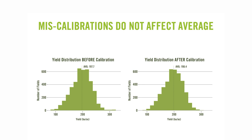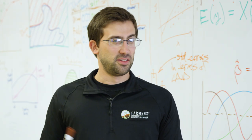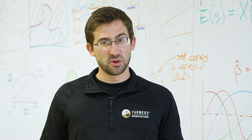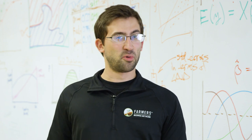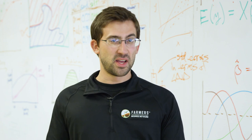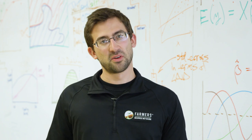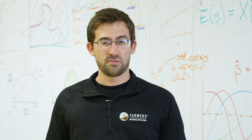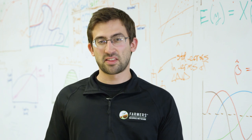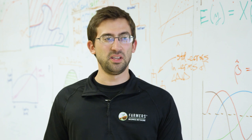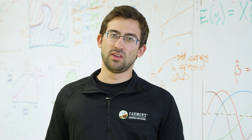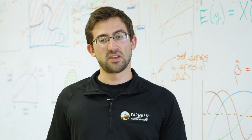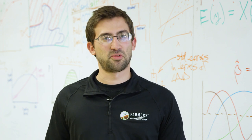If a monitor records yields 10 percent higher on some fields and 10 percent lower on others, you might incorrectly think one field did better when it was actually just a calibration problem. But in aggregate across FBN, data miscalibrated too high and data miscalibrated too low cancel each other out. This doesn't mean you shouldn't calibrate your monitor — it's still very important for your own analytics and benchmarking — but it does give us confidence that in aggregate, even if not everybody calibrates perfectly, the networked analytics and their integrity are preserved.